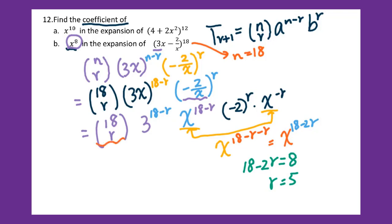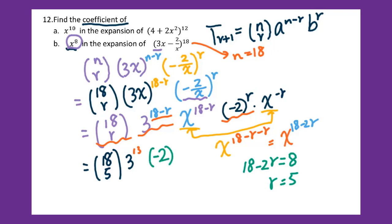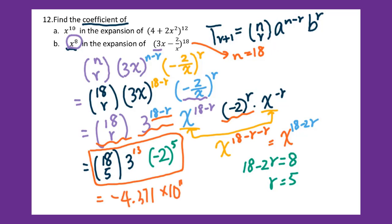Then we plug into the coefficient part. We get 18 taken 5, then 3 to the 13th power — since 18 minus 5 is 13 — times negative 2 to the 5th power. We put all this into the calculator. The answer is very large, so we write it in scientific notation: negative 4.371 times 10 to the eleventh power.